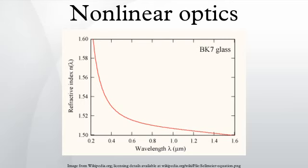Common SHG materials by pump wavelength: 800 nm → BBO, lithium iodate; 860 nm → potassium niobate; 980 nm → KNbO₃; 1064 nm → monopotassium phosphate (KDP), lithium triborate (LBO), and beta barium borate (BBO); 1300 nm → gallium selenide; 1319 nm → KNbO₃, BBO, KDP, potassium titanyl phosphate (KTP), lithium niobate, LiIO₃, and ammonium dihydrogen phosphate (ADP); 1550 nm → potassium titanyl phosphate (KTP), lithium niobate.